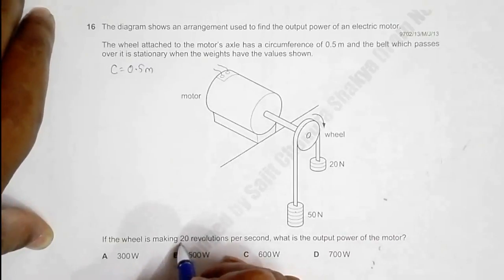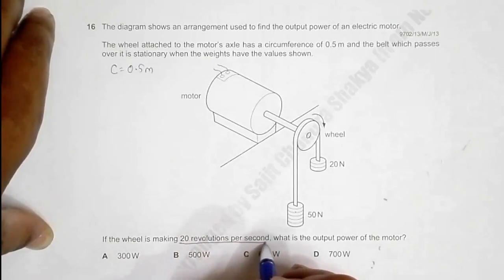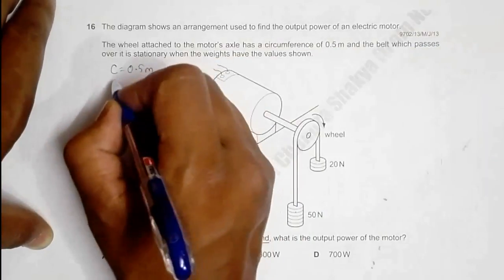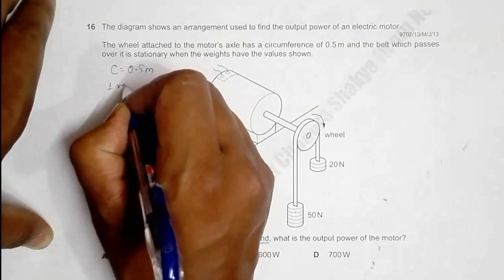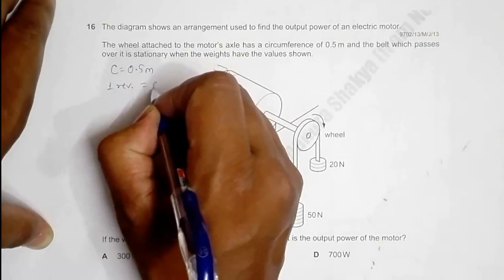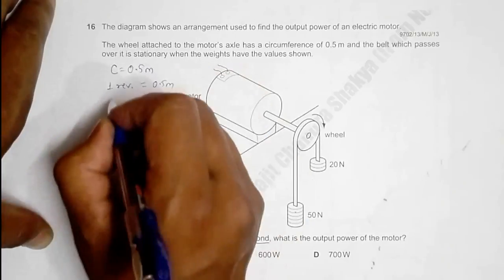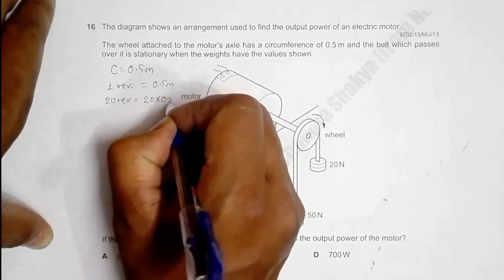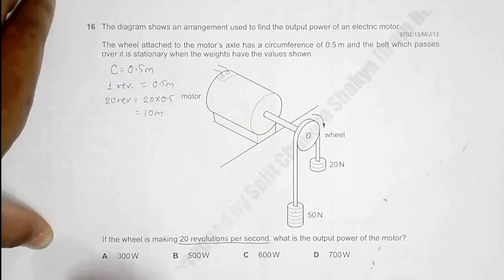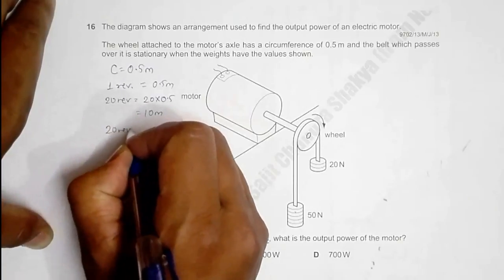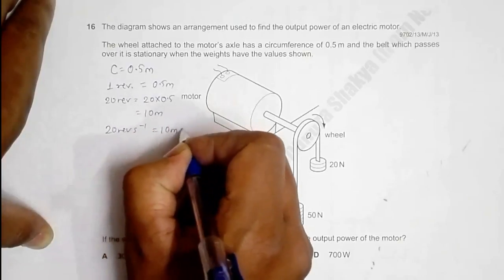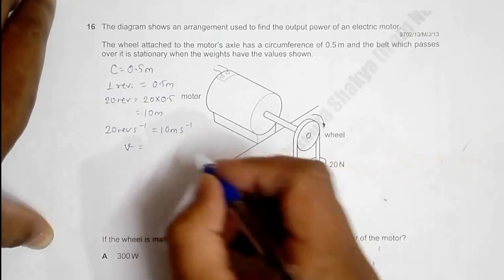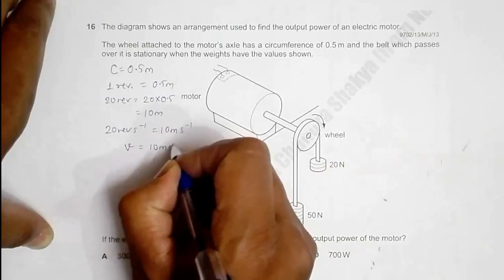First, we have to find the linear velocity. If it's making this rate of revolution, in one revolution it crosses a linear distance of 0.5 meters. So 20 revolutions means 20 × 0.5 = 10 meters. That means 20 revolutions per second equals 10 meters per second. So the linear velocity of this belt would be 10 m/s.